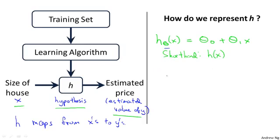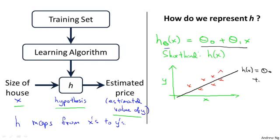And plotting this in pictures, all this means is that we are going to predict that y is a linear function of x. So that's a data set. And what this function is doing is it's predicting that y is some straight line function of x. That's h(x) equals theta 0 plus theta 1 of x.